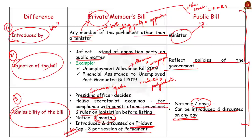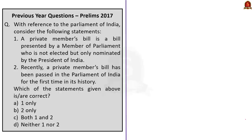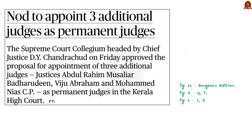These are the major differences between private member bills and public bills — first, introduction of the bill; second, objective of the bill; third, admissibility of the bill. Remember these points as they will be very useful wherever required.